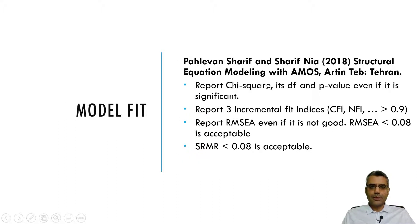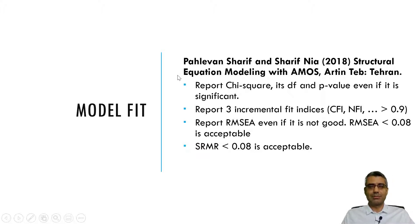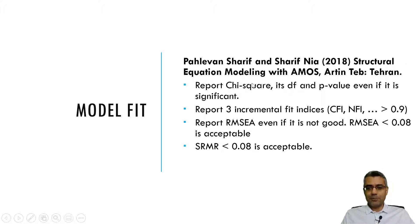From my personal experience publishing papers using structural equation modeling — and based on a book I've published, which is a main textbook in some universities in Iran (unfortunately in Persian) — my suggestion is: report chi-square, its degrees of freedom, and p-value, even if the result is not good, even if it shows the model fit is poor. Always report them.